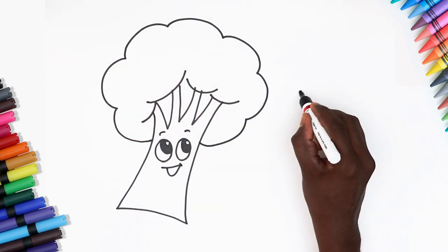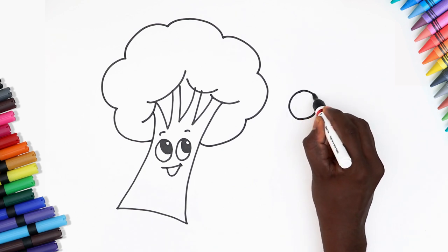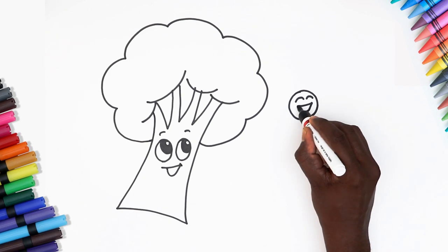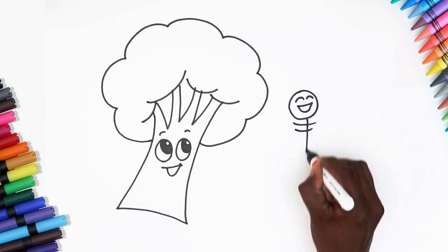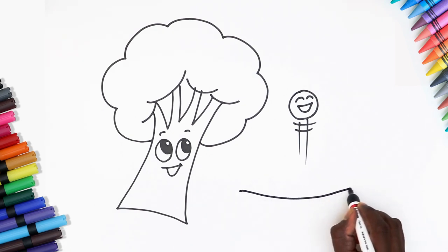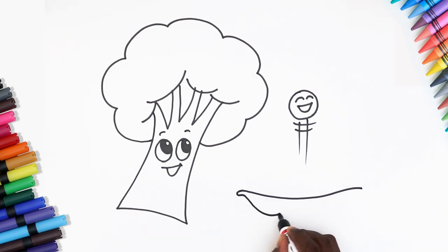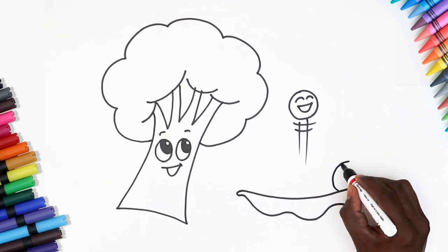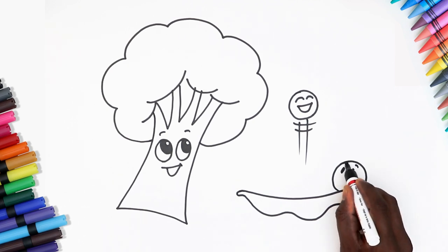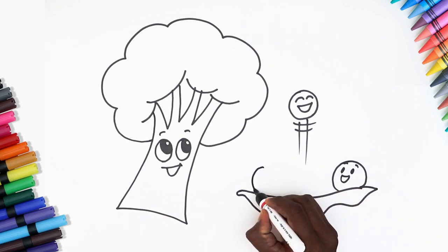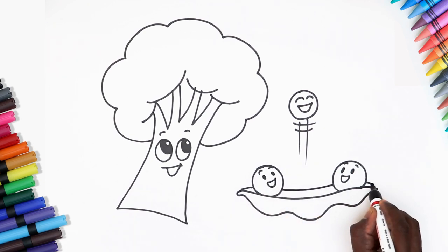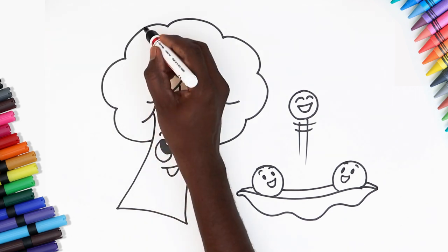Now come the yummy peas. Start with a small circle, eyes and a happy grin. Our cute pea is jumping with joy. Now draw the pod with a curvy line on one side and a wavy line on the other. And in the same way, draw the other peas as well. Wasn't that easy? Let's make our masterpiece better with a nice and neat outline.